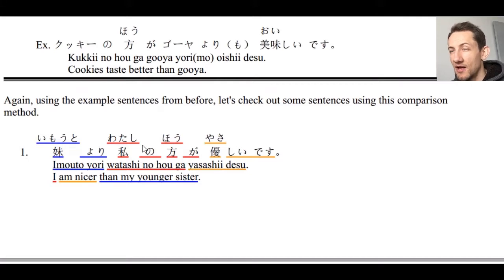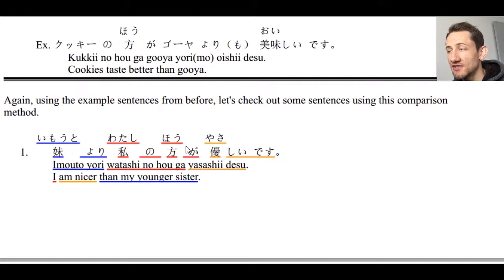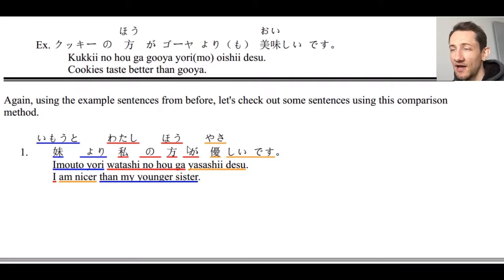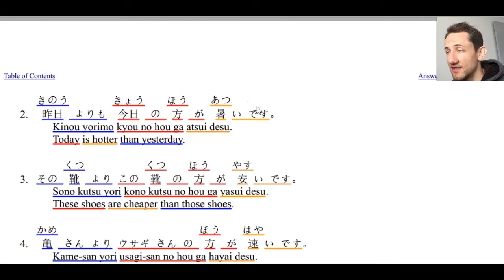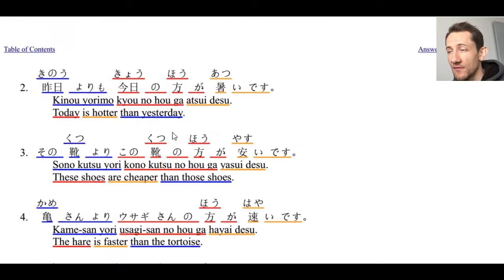Now we're going to look at some more example sentences — same meanings as parts one and two, but structured differently. Number one: imoto yori watashi no hou ga yasashii desu — I am nicer than my younger sister. Number two: kino yori mo kyo no hou ga atsui desu — today is hotter than yesterday. Remember, you can switch the objects: kyo no hou ga kino yori mo atsui desu — however you want to do it.